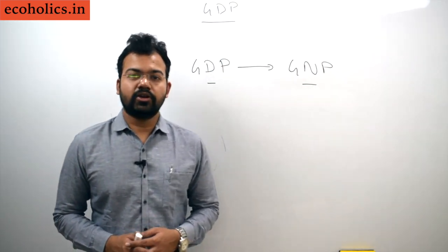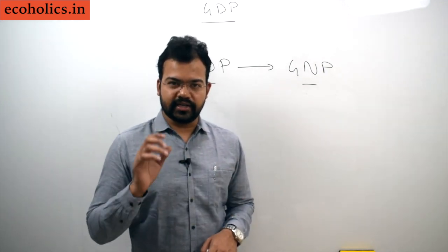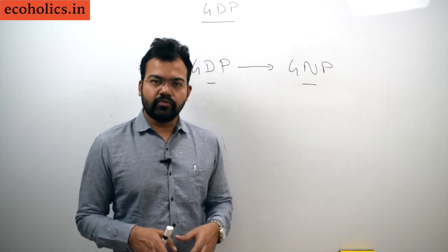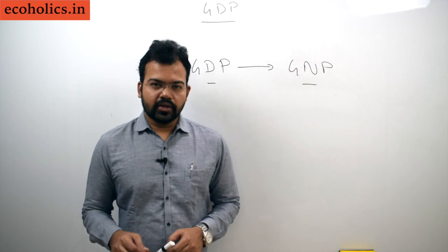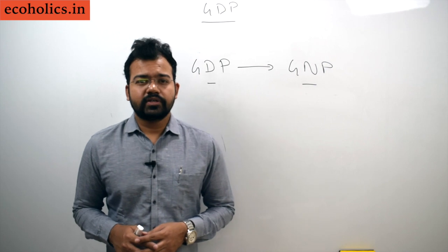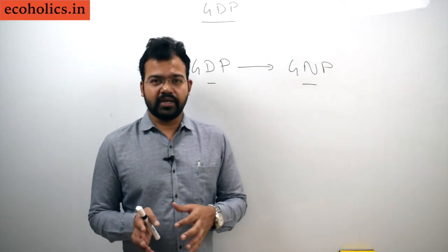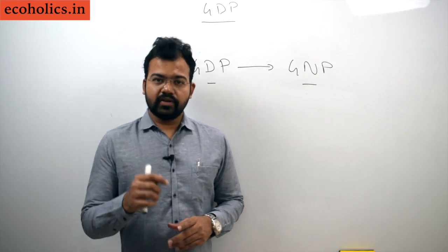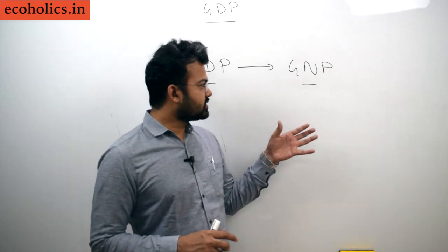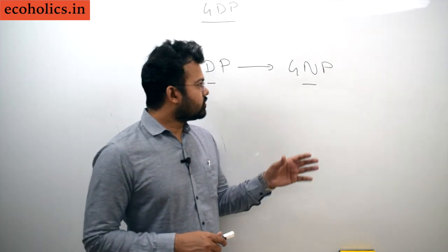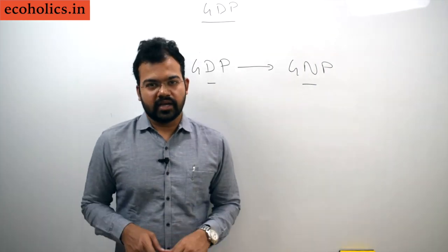Under GNP we consider normal residents — those whose center of economic interest lies in that particular country. For example, a foreigner living and investing in India for many years has their center of economic interest in India. The difference can be understood by comparing the British Empire, whose center of economic interest was Britain, versus the Mughal Empire, whose center of economic interest was India. When converting GDP to GNP, we convert domestic territory to normal residents.